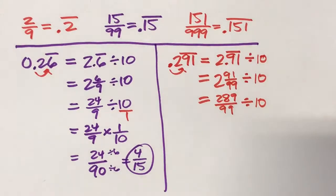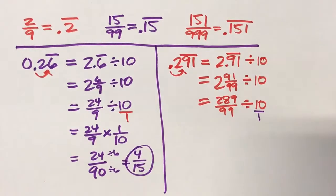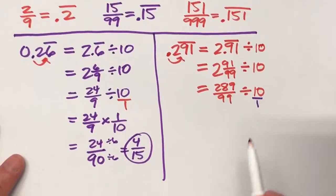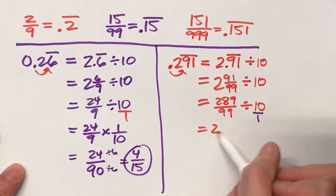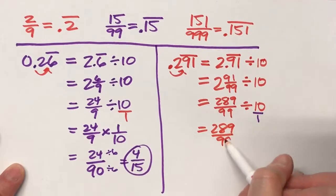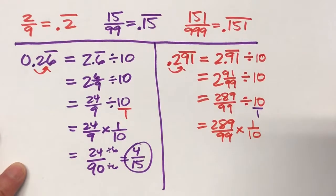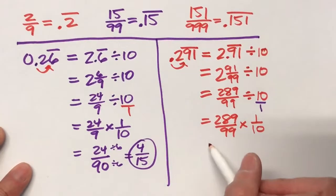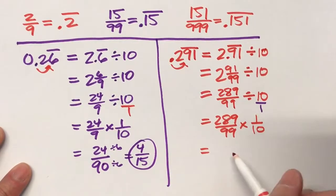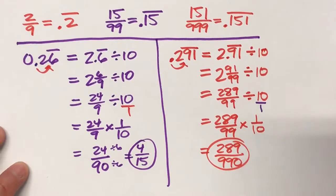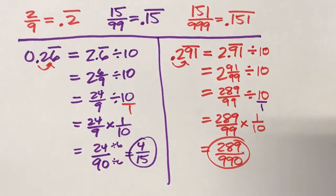Now, we're dividing fractions so we keep the first fraction the same and we multiply by the second fraction flipped over. And now I can get my answer. Top times top, bottom times bottom. And this cannot be reduced. So that is my answer, 289 over 990.